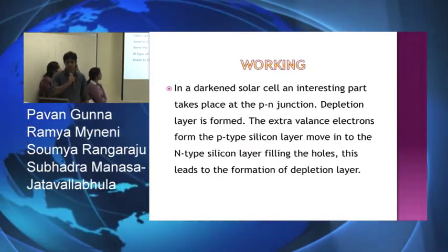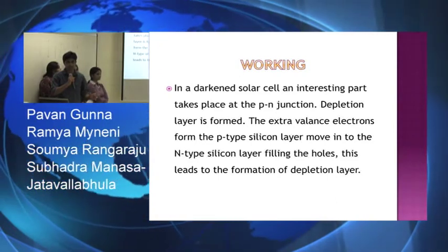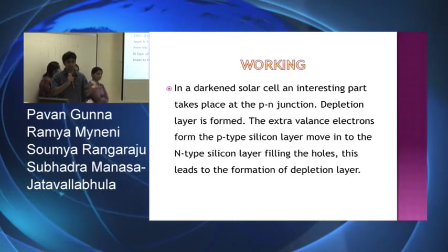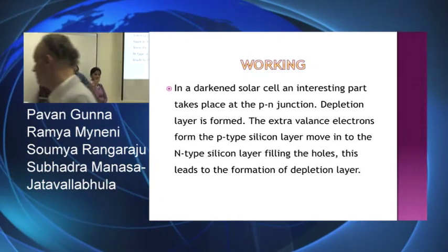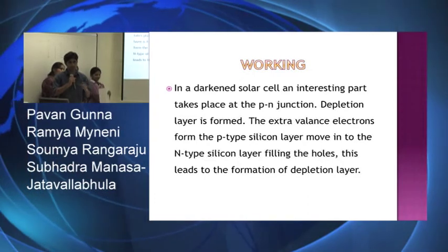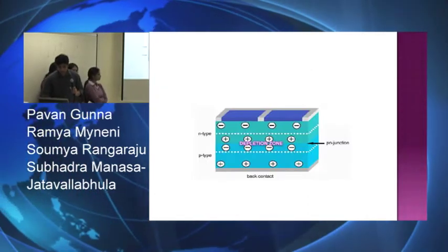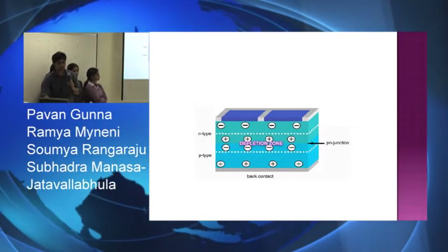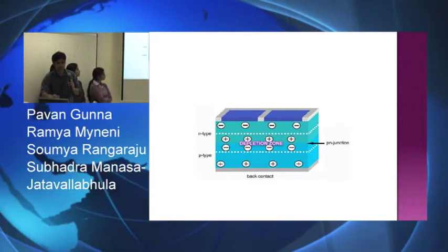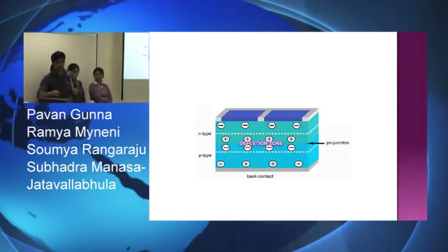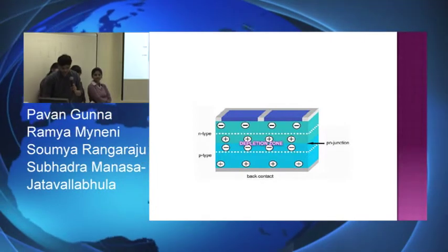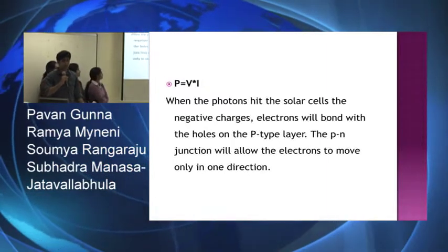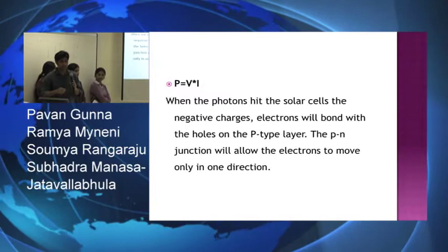Here is the interesting part. In the dark, at the p-n junction, a depletion layer is formed. When both the p- and n-junctions are combined, the electrons leave the holes and go to the n-junction. The depletion zone doesn't allow the holes and electrons to cross over to the other side. And here is the formula for power: P equals V times I, where V is the voltage, I is the current, and P is the power.